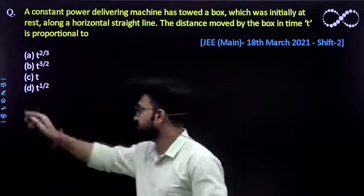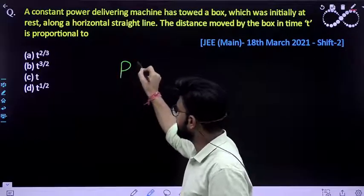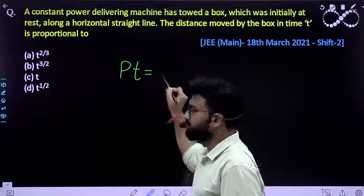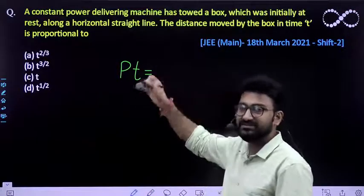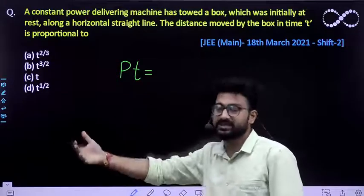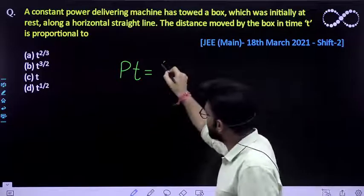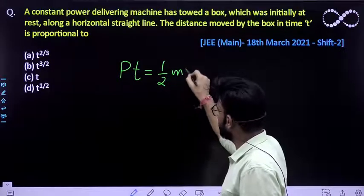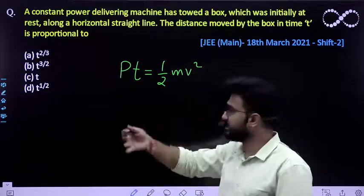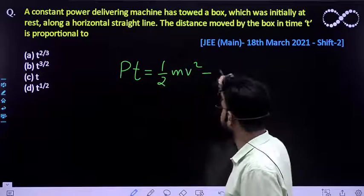We already know that work done by this machine is nothing but power multiplied by time, which is nothing but change in its kinetic energy because that would be the gain in its kinetic energy. So it will be half m v squared, at time t its speed will be v. Initial kinetic energy was already zero.